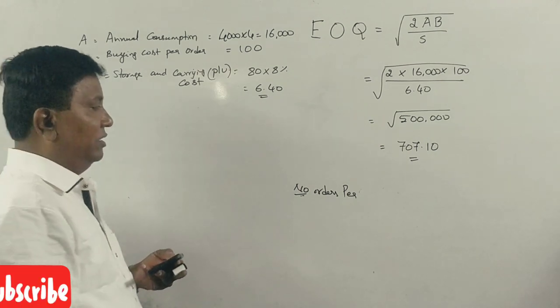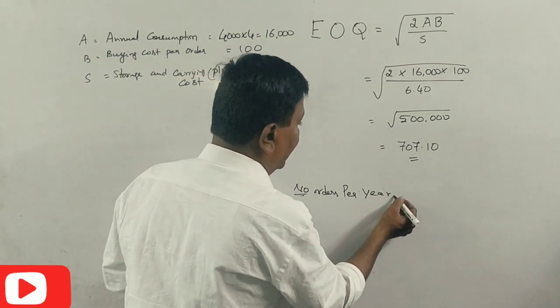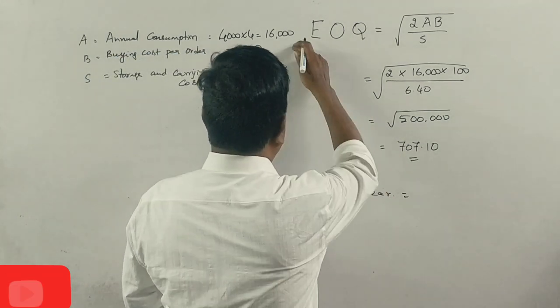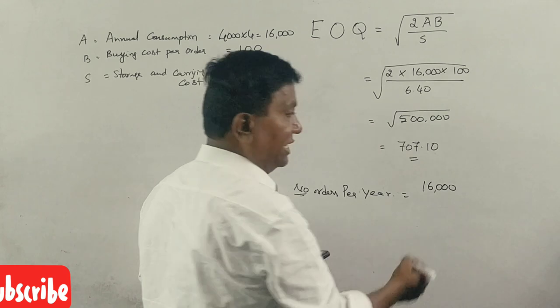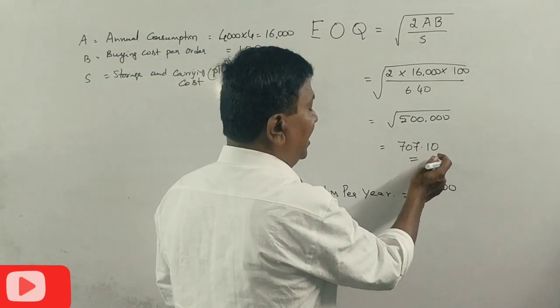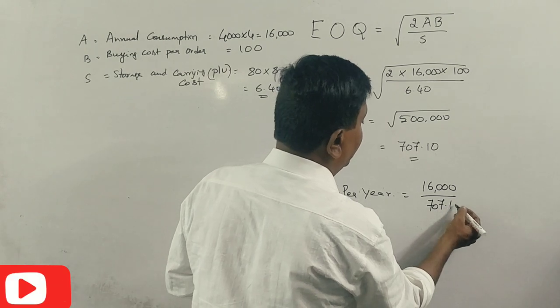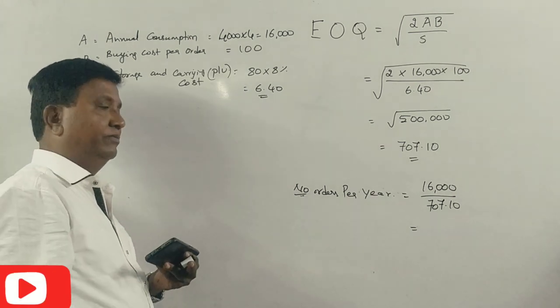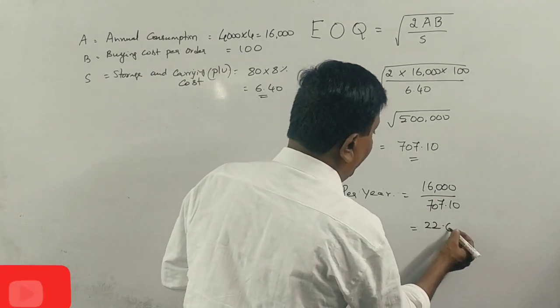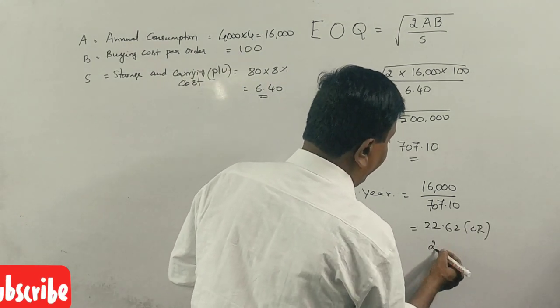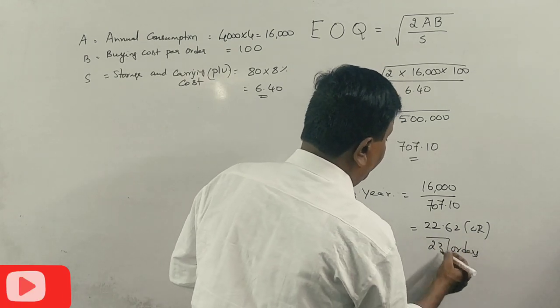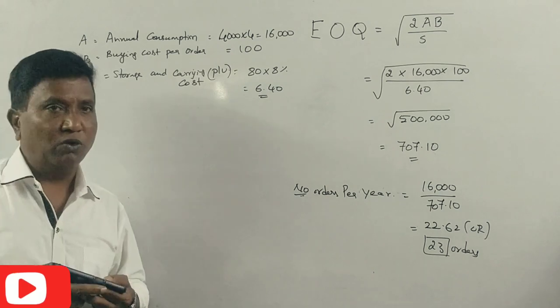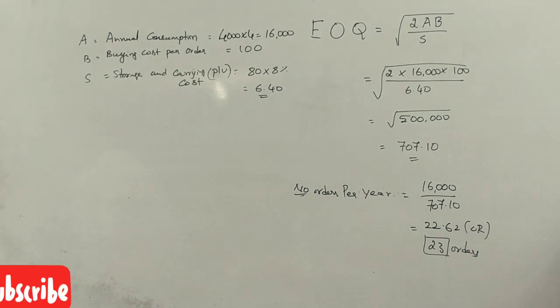This is the EOQ. Now, number of orders per year. One order is 707 units. 16,000 divided by 707.1 equals 22.62, so 23 orders per year.